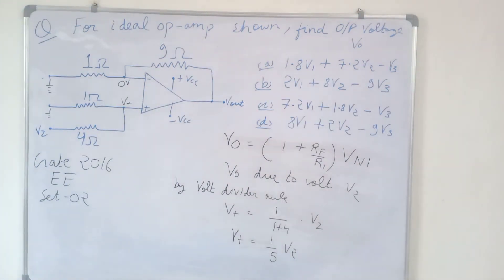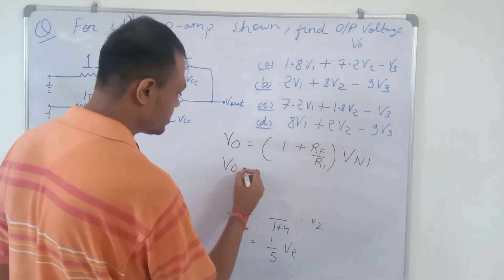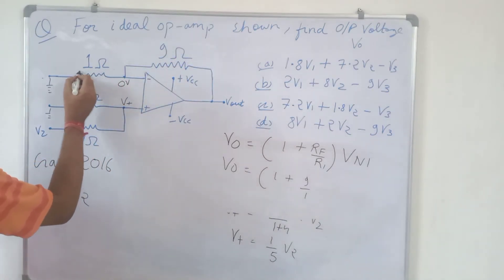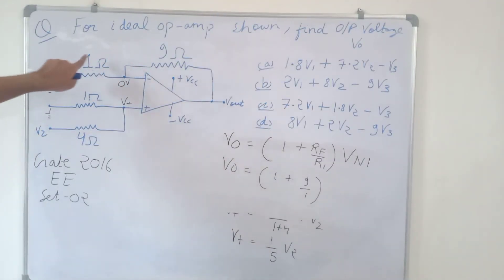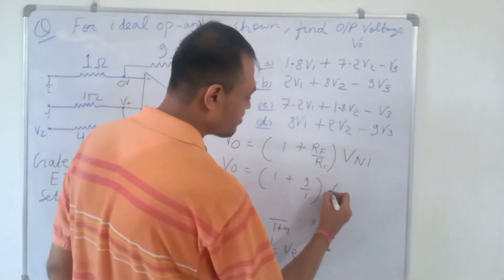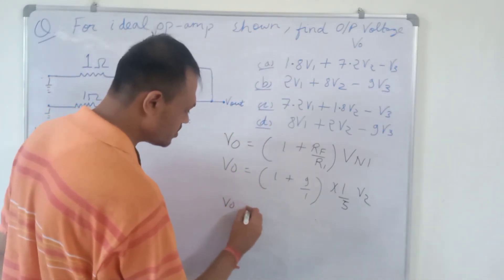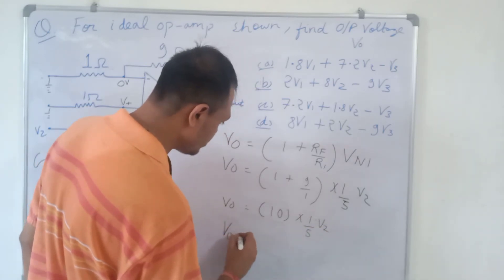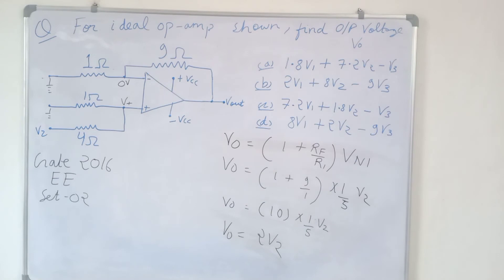With V+ = (1/5)V2 as the non-inverting voltage, and Rf = 9 ohm, R1 = 1 ohm remaining the same: V0 = (1 + 9/1) × (1/5)V2 = 10 × (1/5)V2 = 2V2. Option D gives 2V2, confirming option D is correct. We have now verified the answer twice.